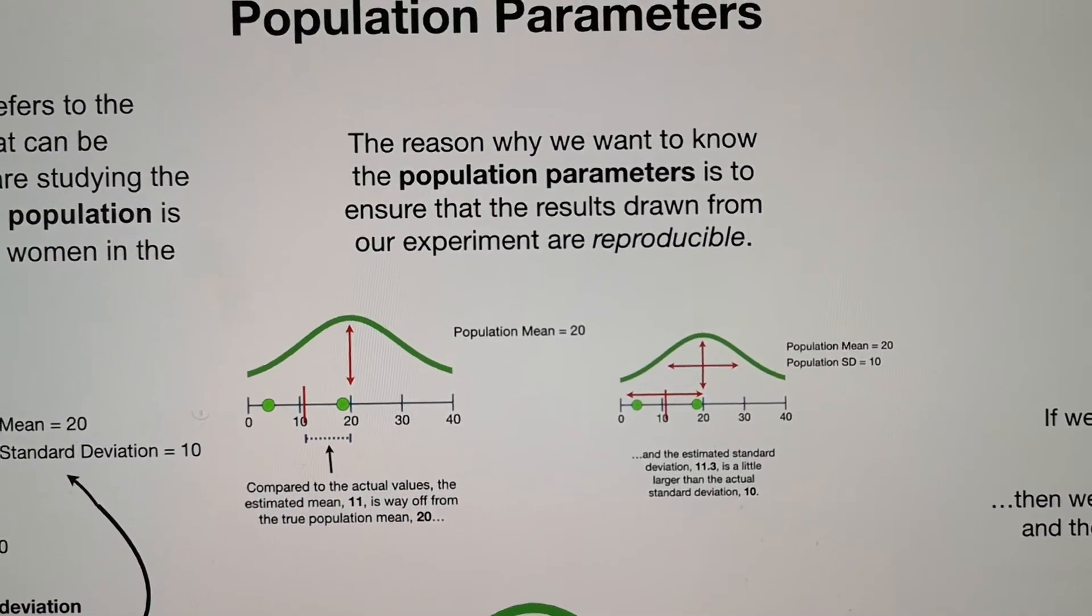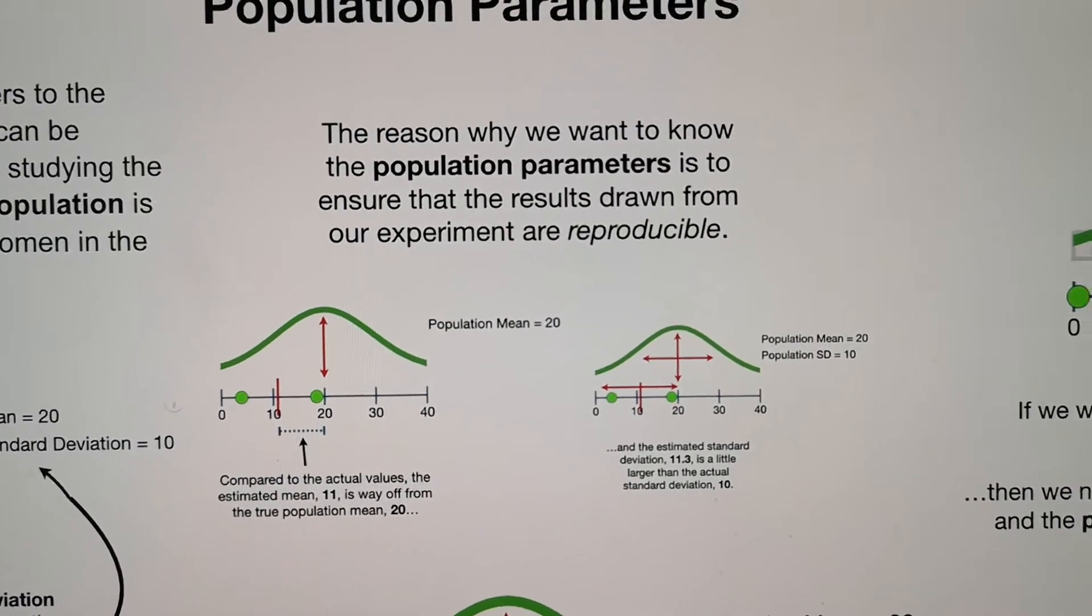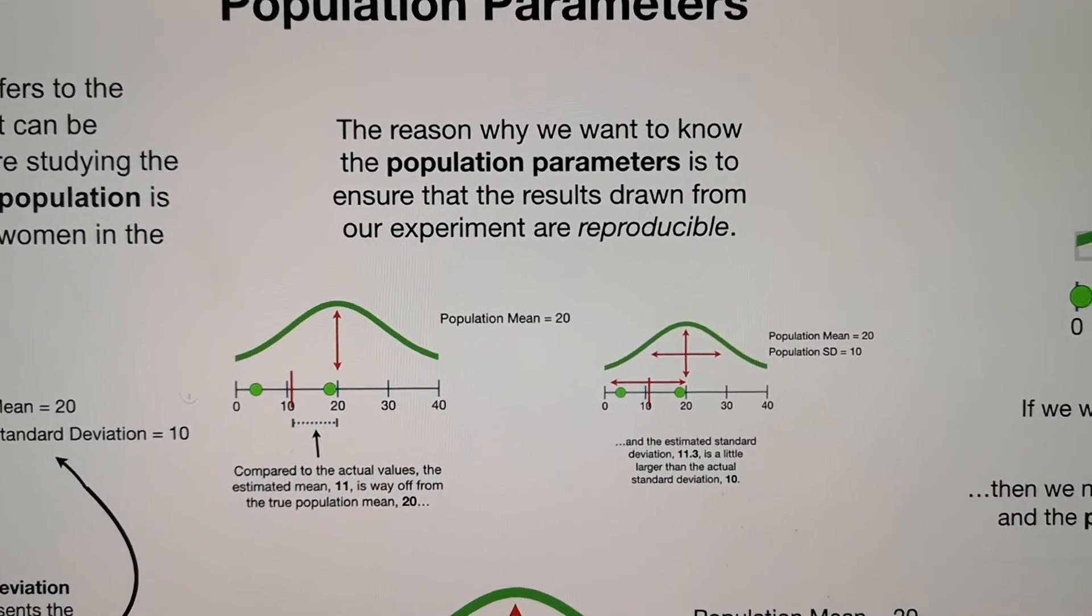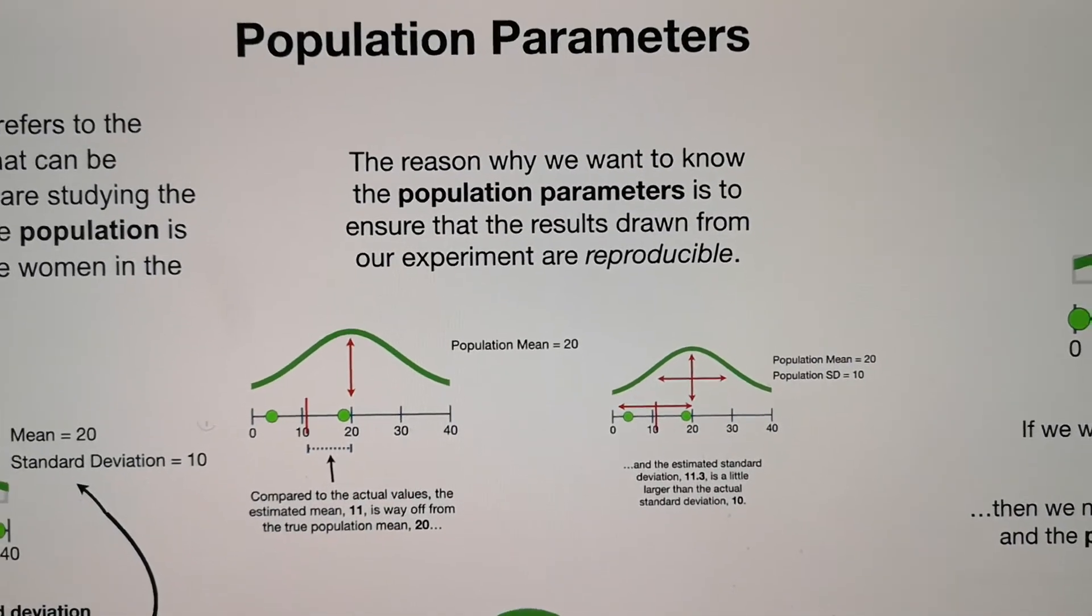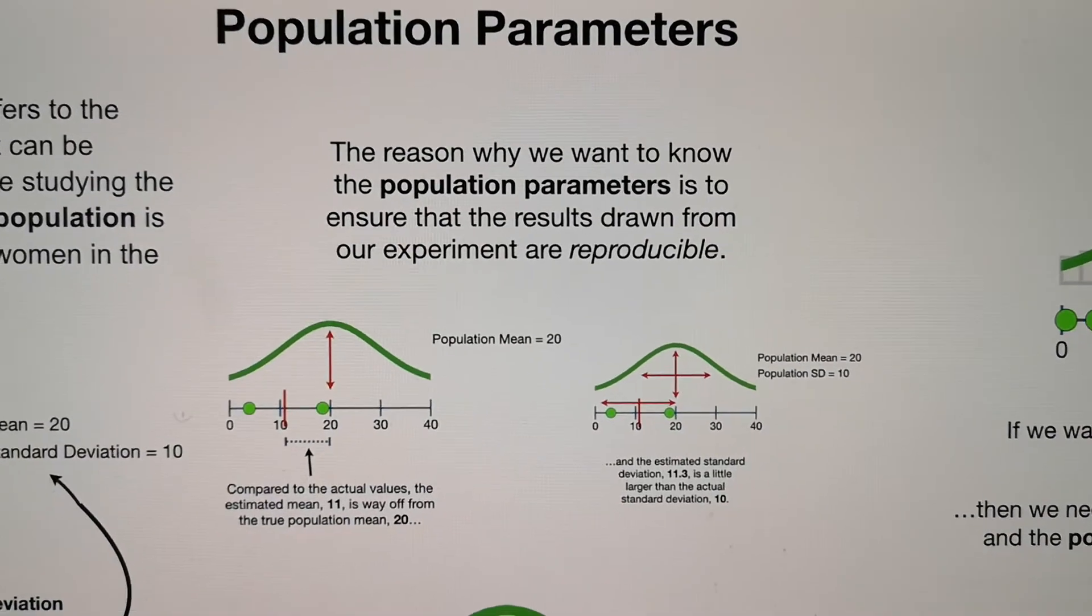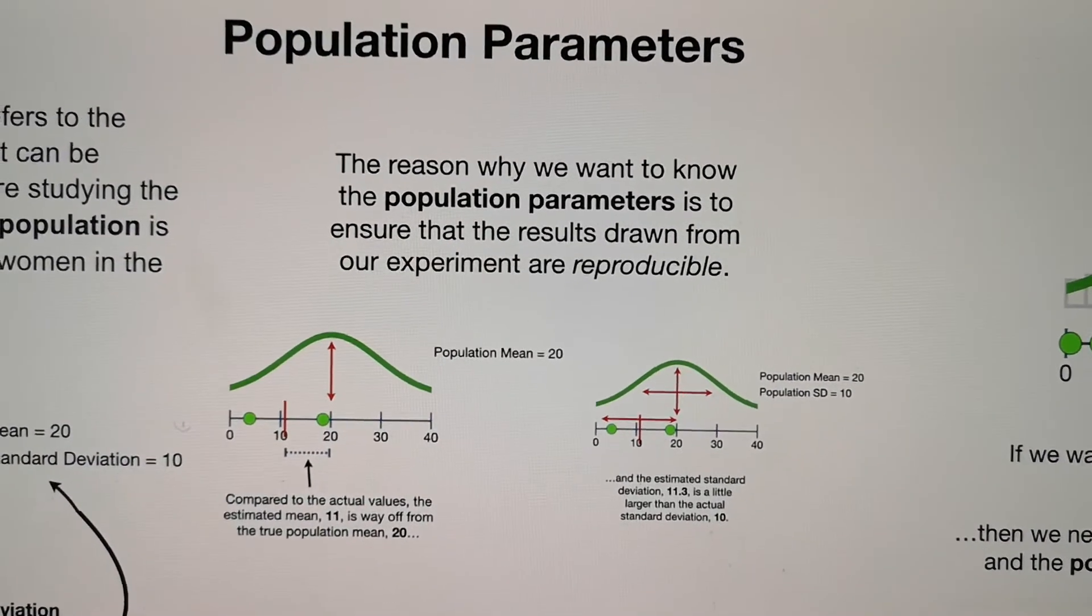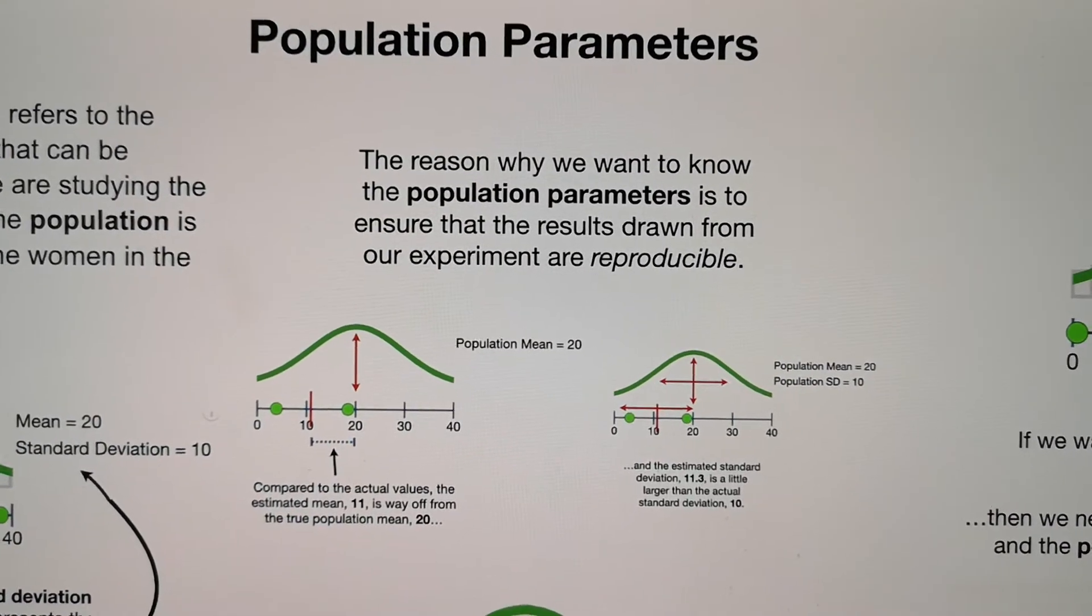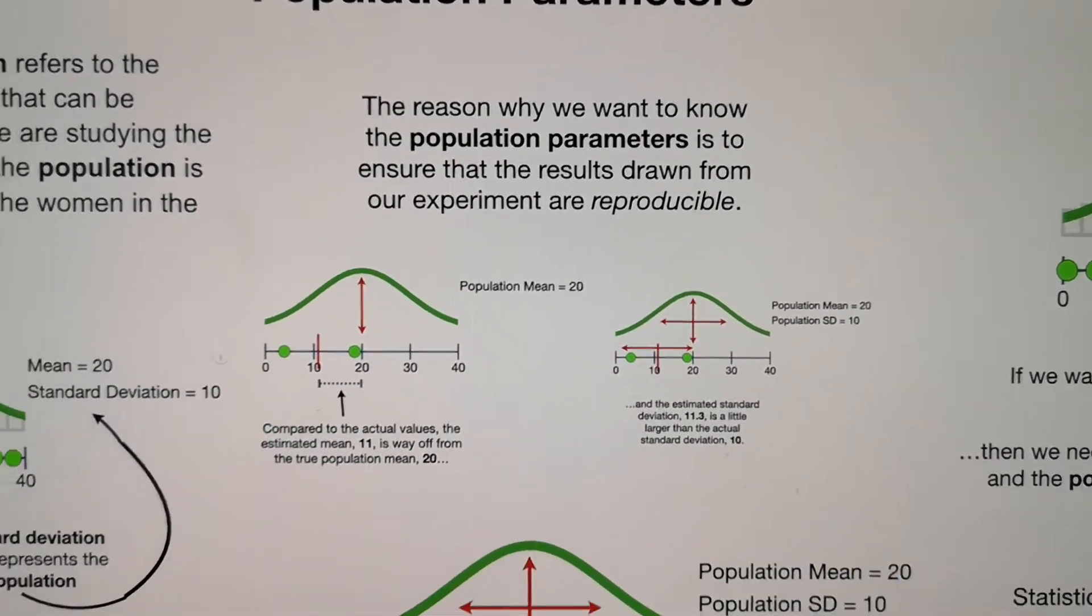For example, we know the population mean is 20 and the standard deviation is 10. If we only get two samples from this population, the mean is quite different than the true population mean, which is 11 versus 20. Same with the population standard deviation. It's 11.3, which is not equal to the 10.